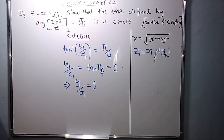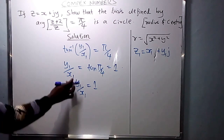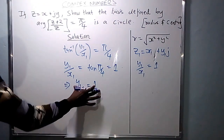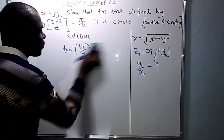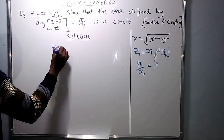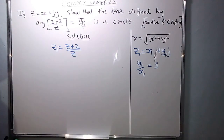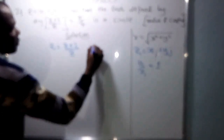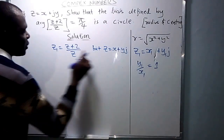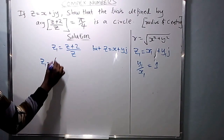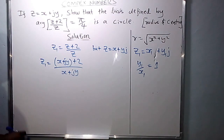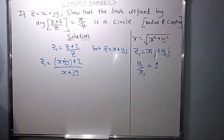So Y1 over X1 equals 1. To solve this, all we need to find is Y1 and X1. We go back to what Z1 is: Z1 equals (Z+2)/Z. We substitute Z equals X plus JY, so Z1 equals (X + JY) plus 2 over (X + JY).